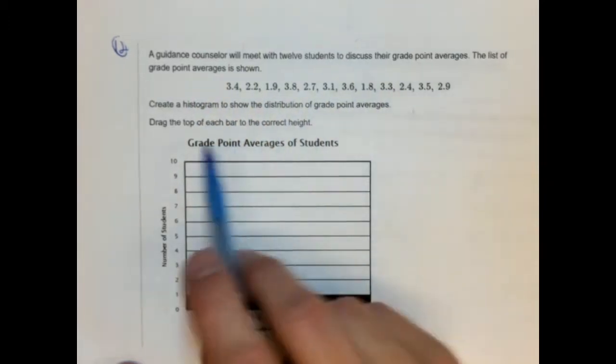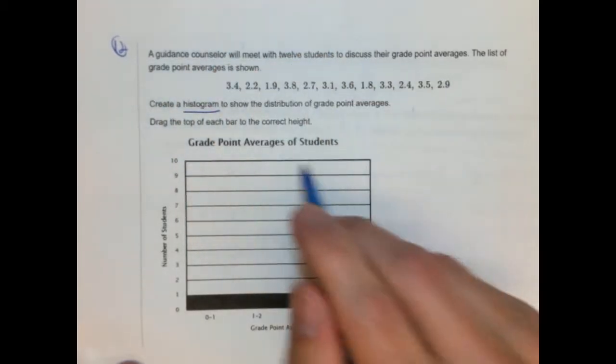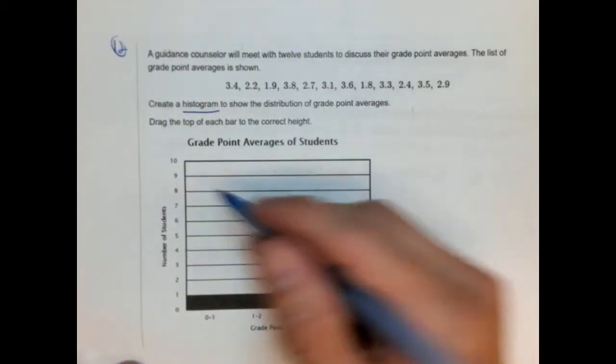So number 12, a guidance counselor will meet with 12 students to discuss their grade point averages. The list of the grade point averages is shown below. They give us 12 numbers here. These are all representing these kids' grades, or GPAs rather. Create a histogram to show the distribution of grade point averages. So that's what we're going to create here.